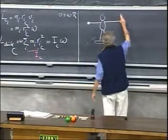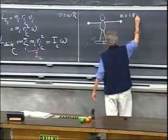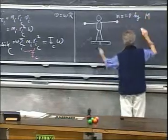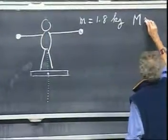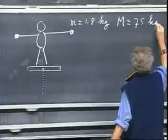So these weights M, 1.8 kilograms, my entire mass including the turntable and my body, let's say, is about 75 kilograms.